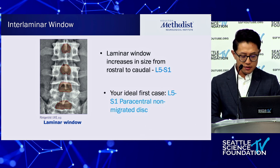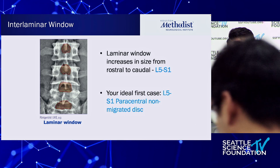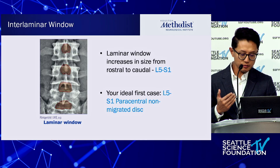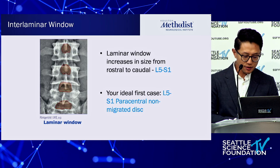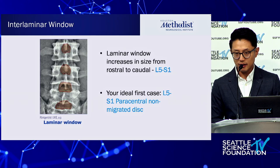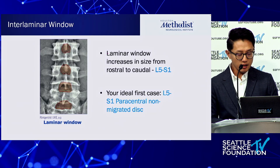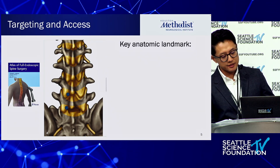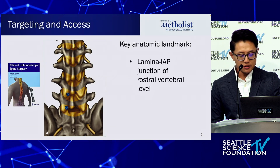The window is biggest at L5-S1. So in my opinion, your ideal first case — if you're here at this course or watching this video thinking about your first interlaminar case — is an L5-S1 paracentral non-migrated herniated soft disc in otherwise normal anatomy.